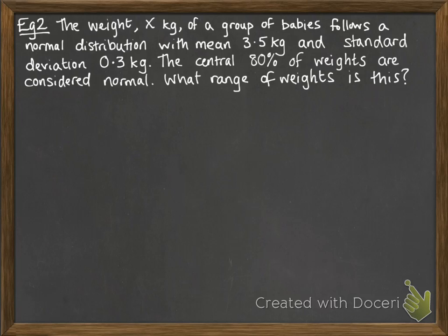So we've got weights of babies this time, following a normal distribution with mean of 3.5, standard deviation 0.3. The central 80% of weights are considered normal. We want to know what range of weights this is.